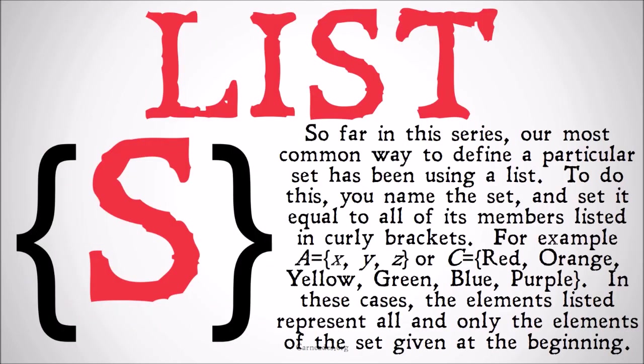We'll start off with a list. So far in this series our most common way to define a particular set has been using a list, and this is probably the easiest to conceptualize. To do this, you name the set and set it equal to all of its members listed in curly brackets. For example, A equals {x, y, z}.